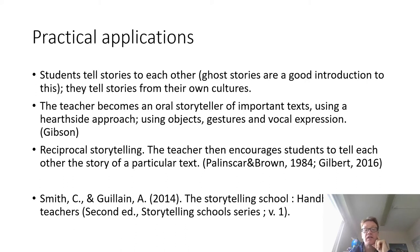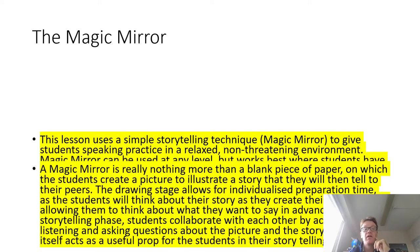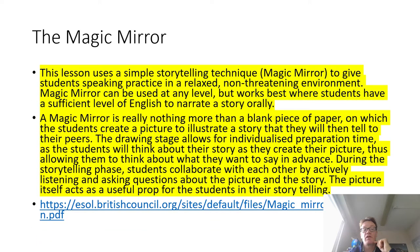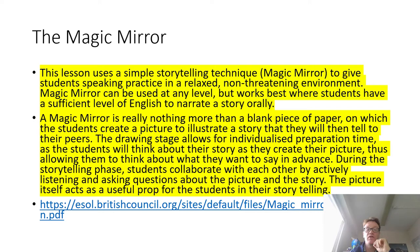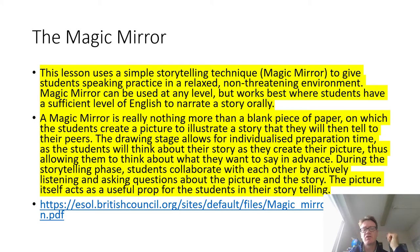There's a nice handbook about storytelling in school, well worth looking at — though more aimed at primary, so many of the primary aspects can be translated to secondary. The British Council have an interesting lesson plan about something called The Magic Mirror, basically getting students to illustrate a story using a drawing, and then using that drawing to prepare to tell a story collaboratively. The picture acts as a useful prop for students in their storytelling — a visual organizer, something that Robert Marzano looks at, to help students tell stories.